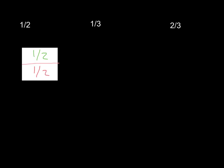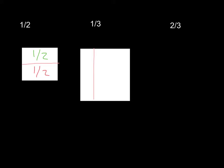Now for one third, we still have a rectangle, and we're going to divide it into three pieces. The first person would get one third, the second person would get one third, and the final person would get one third. So the number on the bottom tells you how many pieces are in the whole. You have one whole divided into three pieces, and one whole divided into two pieces.